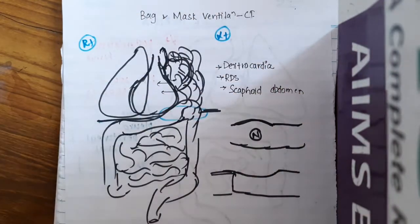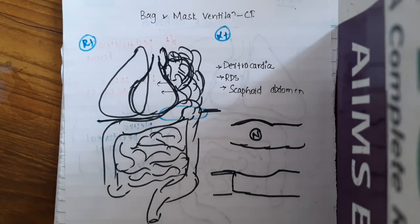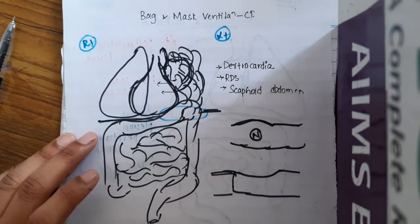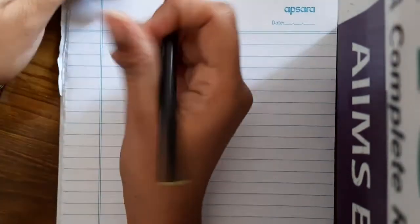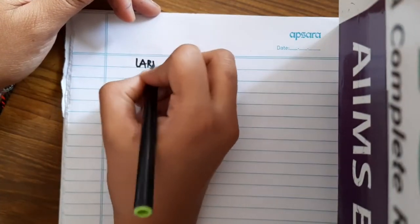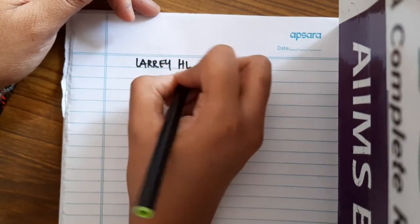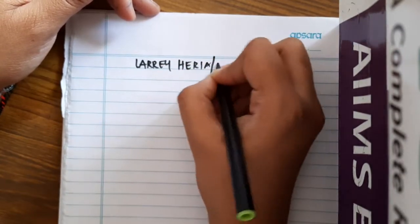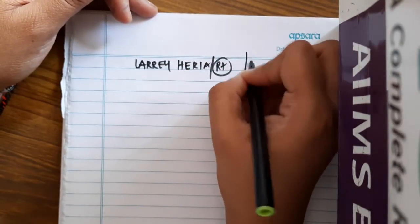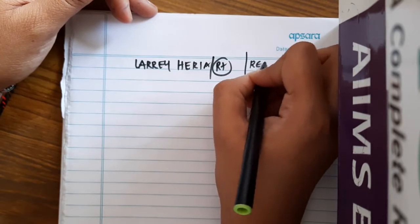This is about Bochdalek hernia. Along with Bochdalek hernia, we also have one more type of congenital diaphragmatic hernia, which is called Larrey's hernia — also known as right-sided hernia or retrosternal hernia.